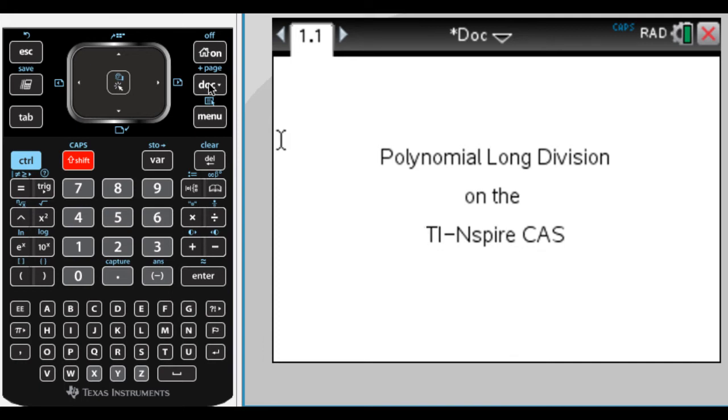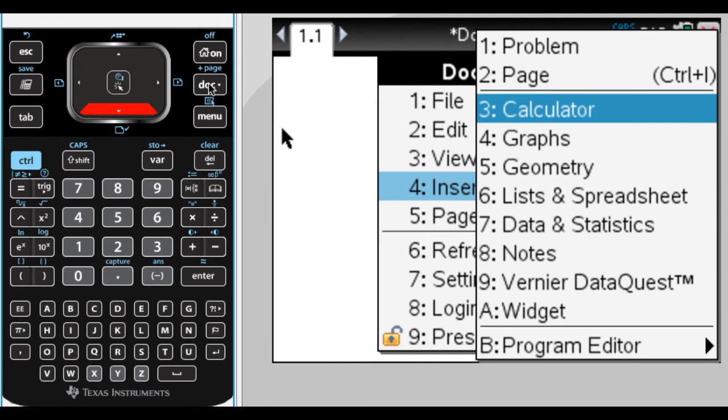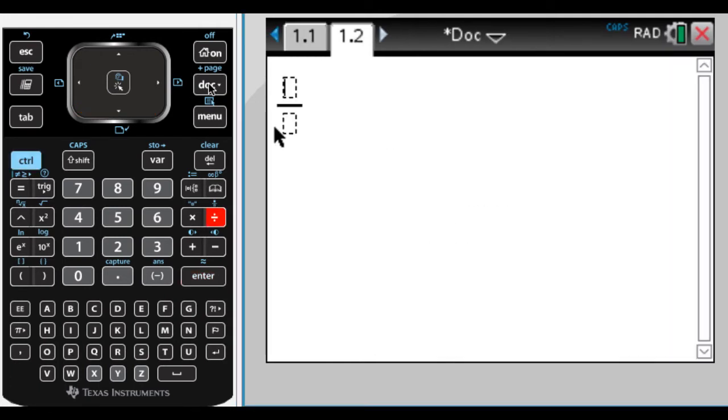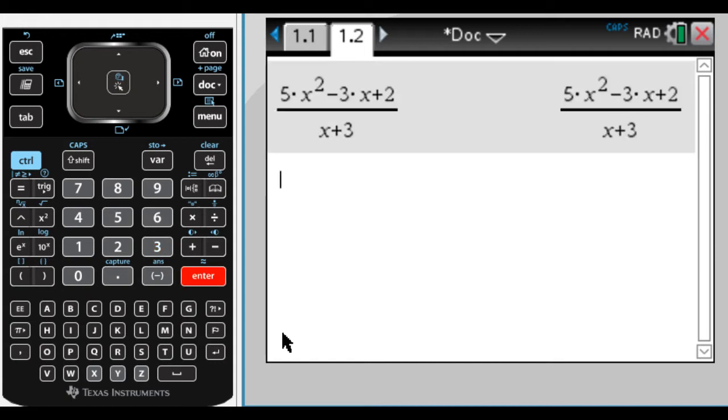So the first thing I'm going to do is I'm going to put in a calculator page. So polynomial long division, the problems usually start looking something like, let's say this. So when I press enter, the calculator doesn't actually do what you might think it'll do, which is maybe divide. Instead, it's just going to return what you typed. So you have to know what to press.